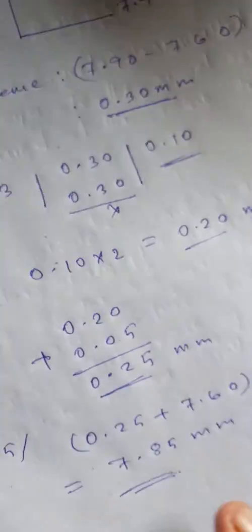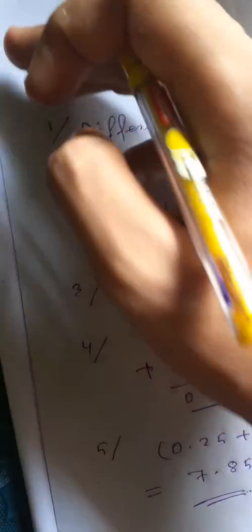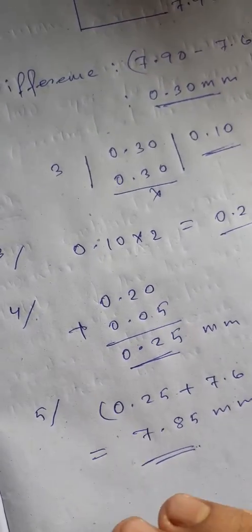This is how we can calculate base curve from keratometry values. Follow these steps and you can easily calculate base curve for any RGB contact lens.